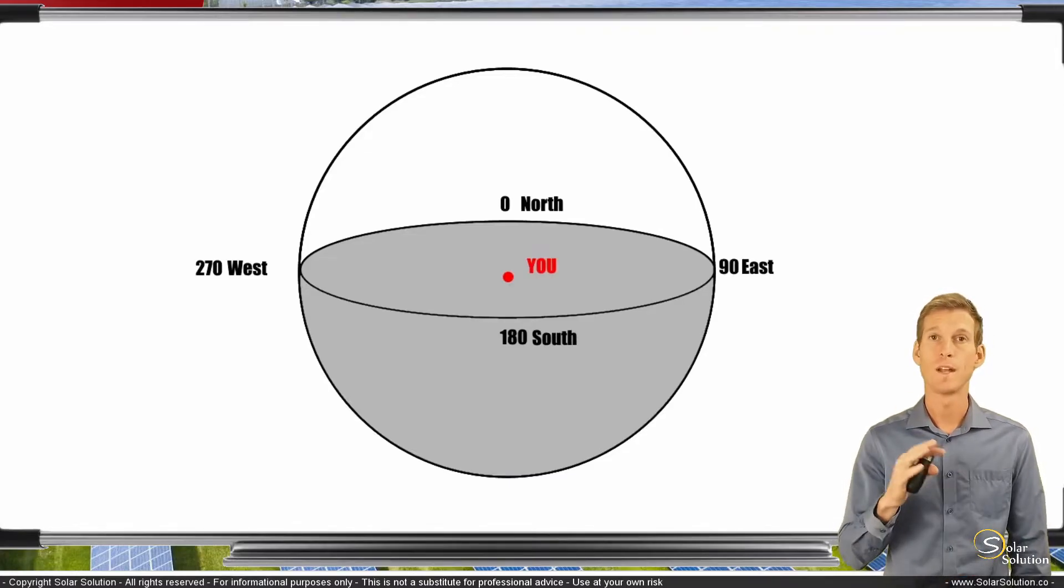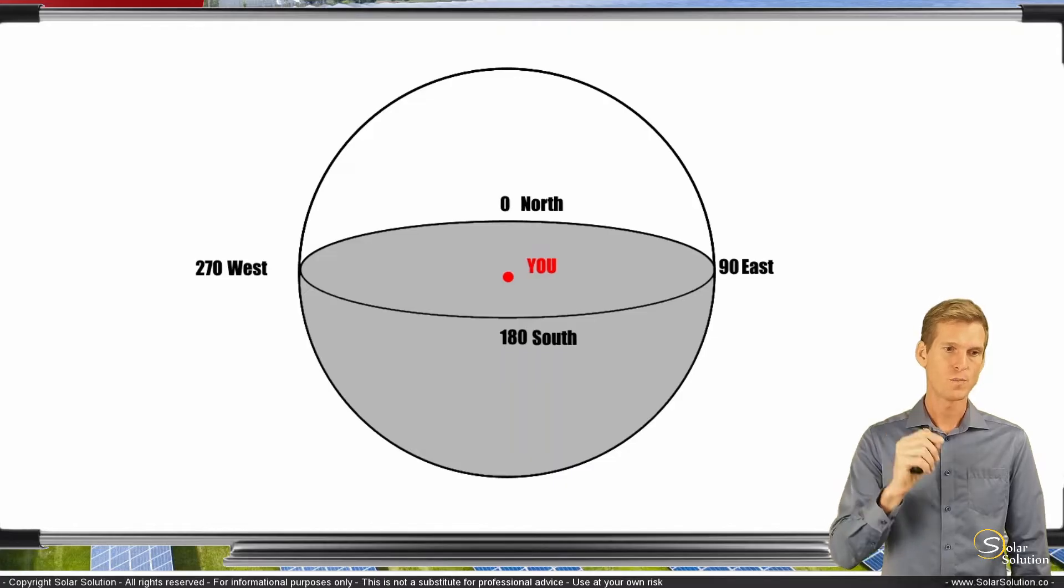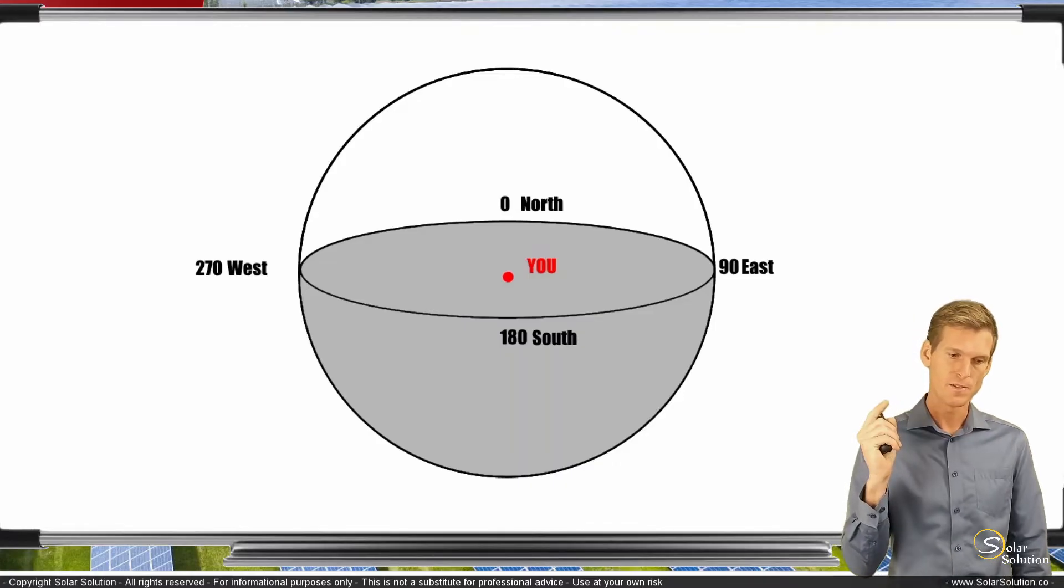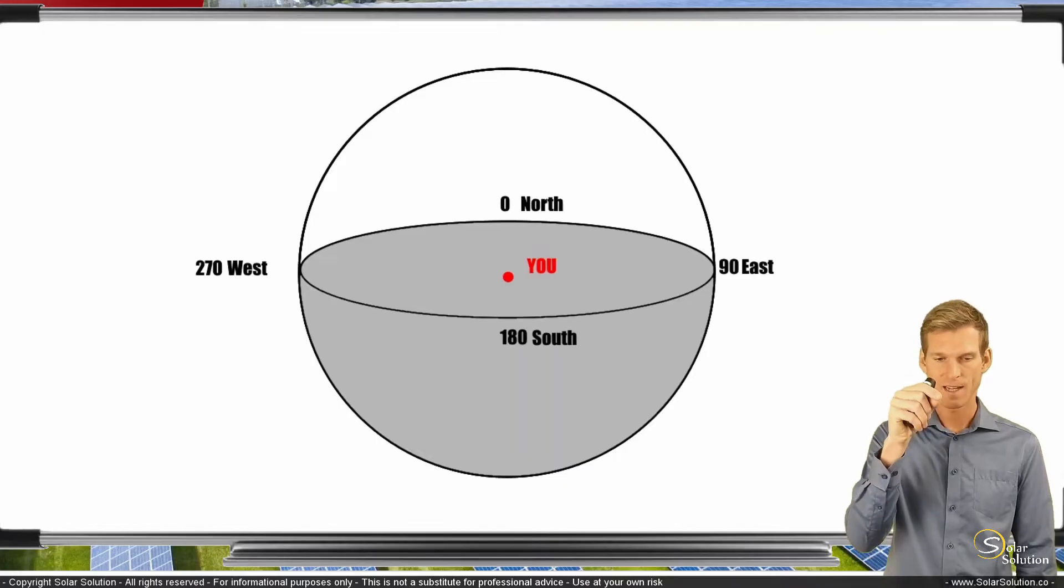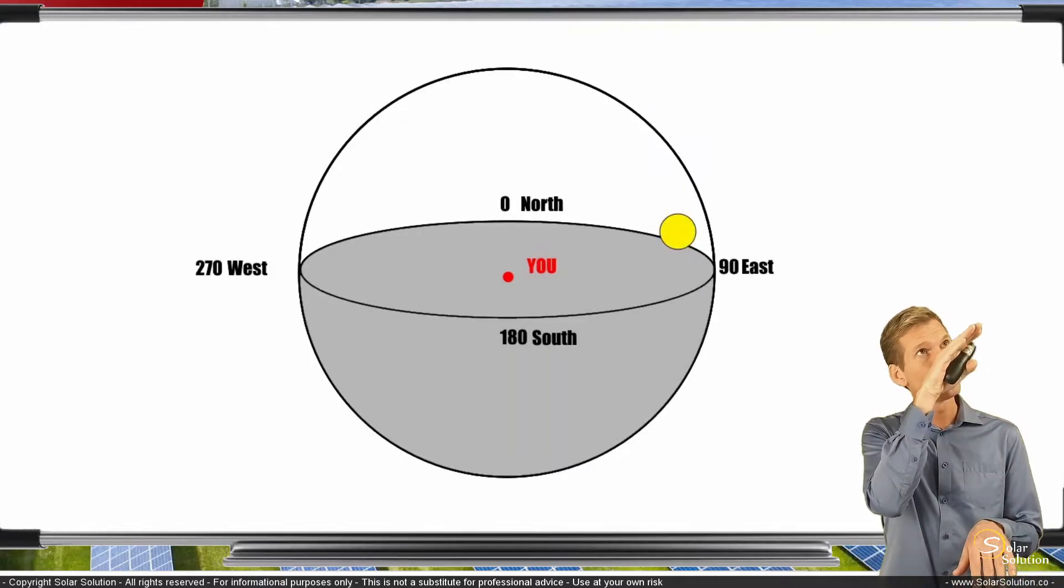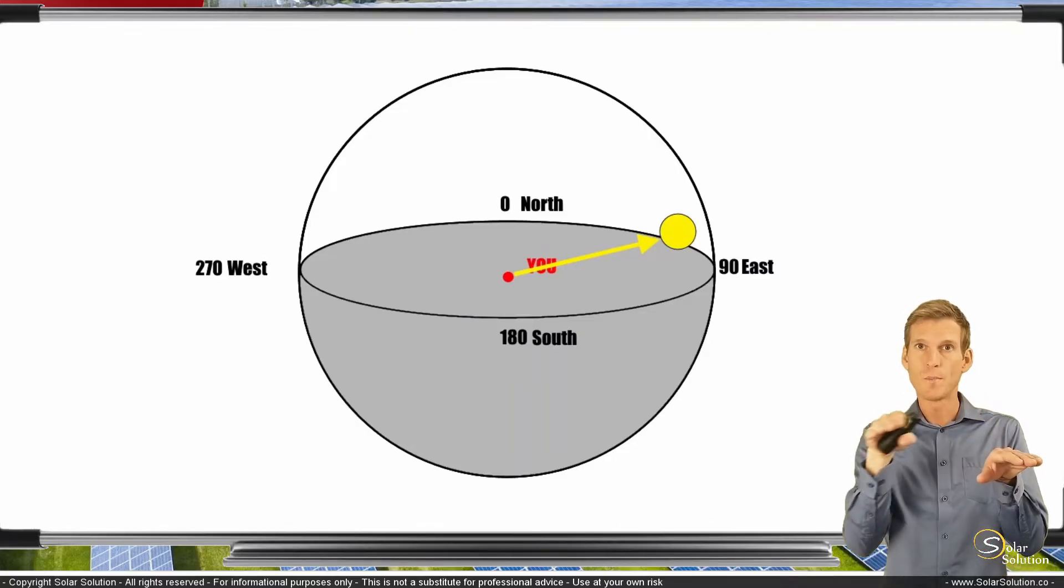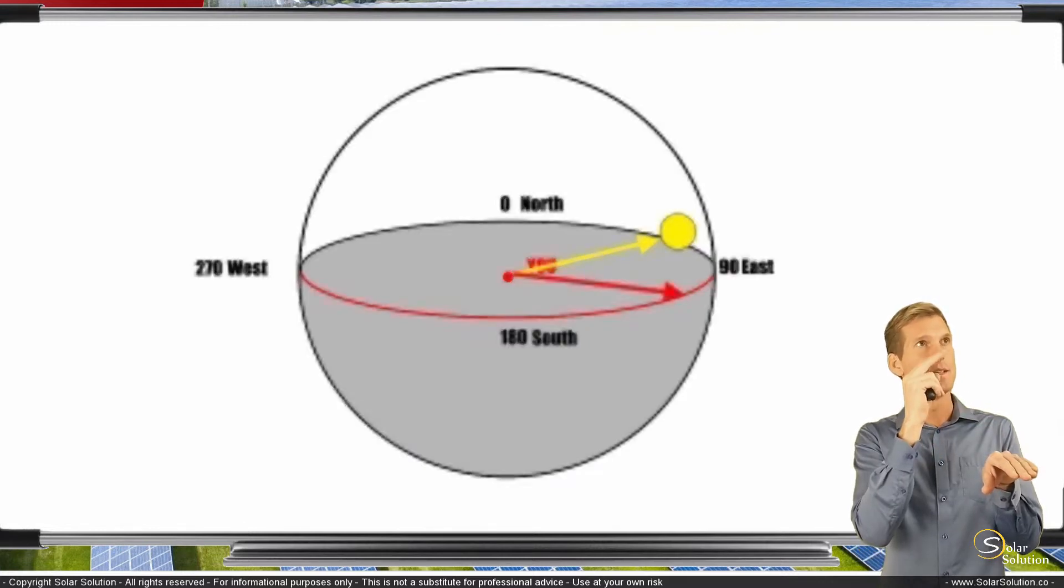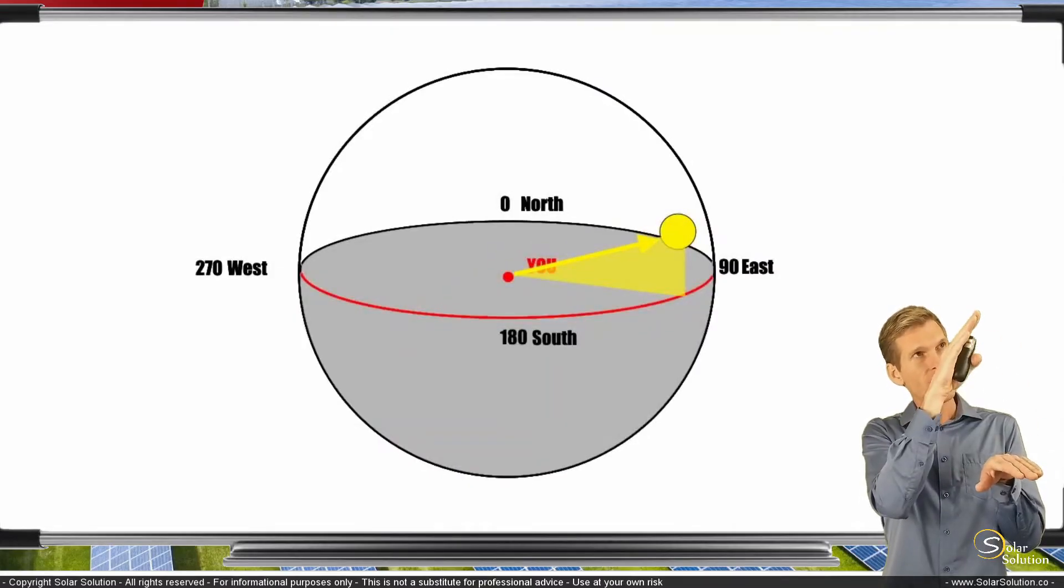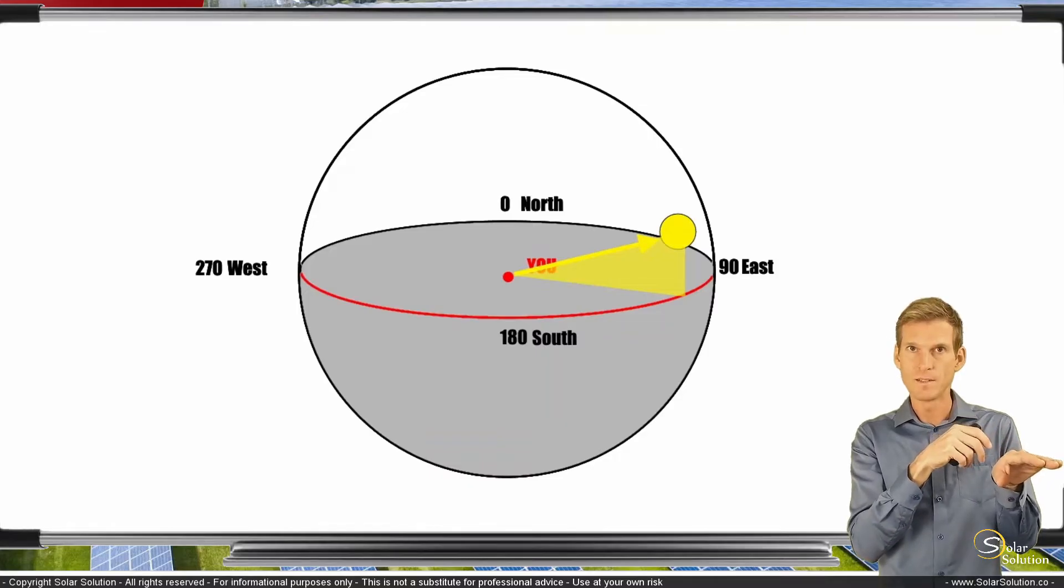So now let's imagine you are somewhere on the northern hemisphere, it is during the summer, early in the morning, the sun just came up. You want to express the relative position of the sun towards you as the observer in this spherical coordination system. The sun just came up, you're looking up at the sun, but you want to express what the position of the sun is in a horizontal plane. So you draw an imaginary triangle, then you draw a line straight from the sun down, and where it hits the horizontal plane, that is your azimuth.